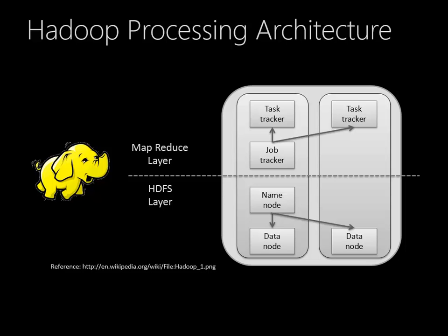On top of that is a MapReduce layer. The MapReduce layer is really the processing layer that reads and interprets the data. So all the schema-on-read that we talked about in the last lesson is being done in this MapReduce layer.